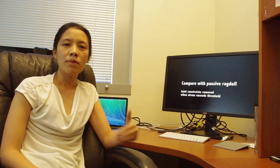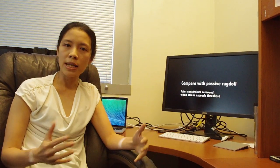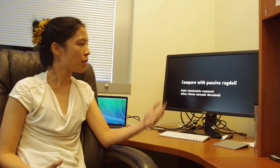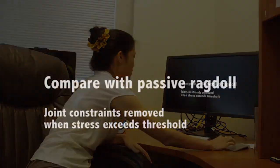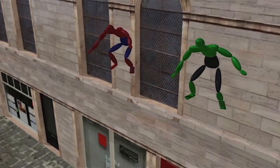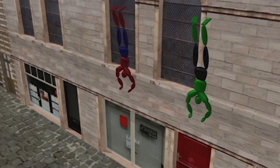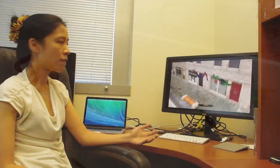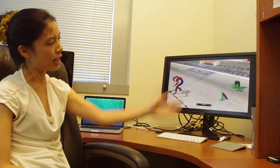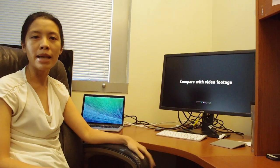Before we can realize our research in real-world robots, we want to first test it in the simulated world with virtual humans. Here in this video, we demonstrate that if you have a good strategy when you fall, you will have a better chance to survive compared to the case where you just fall passively.